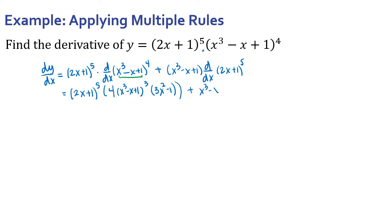Plus (x³ - x + 1) times — and again, chain rule here. The inside function is 2x + 1, and the outside is something to the fifth power. So the derivative is 5 times (2x + 1) to the fourth power, times the derivative of the inside, which is 2. You can leave it here for now, or factor this out further if you'd like.